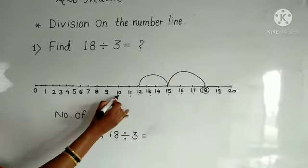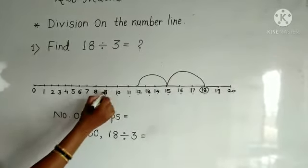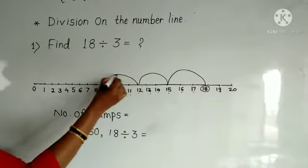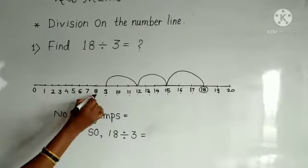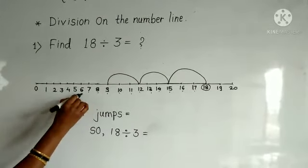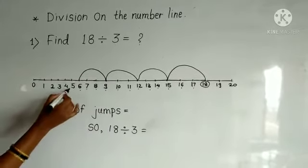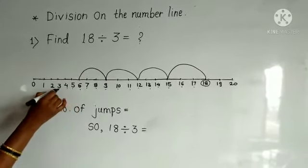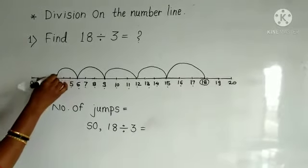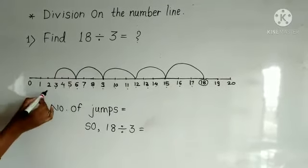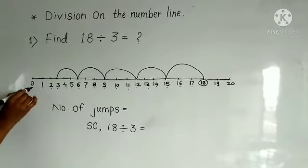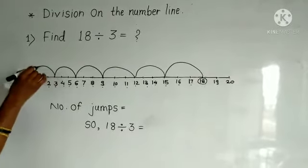Next, 1, 2, 3, jump to the number 9. Next, 1, 2, 3, jump on the number 6. Next, 1, 2, 3, jump on the number 3. Next, 1, 2, 3, jump on the number 0.